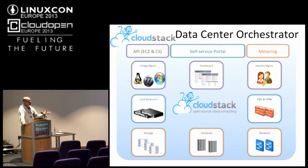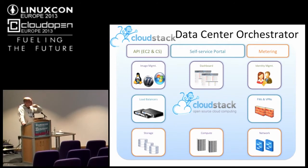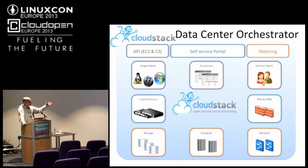We have two types of networking: basic networking and advanced. In advanced networking, we isolate all users in VLANs. In basic, all users share the same broadcast domain, so isolation between them needs to be done differently — we do it with security groups, just like Amazon. In networking, you can also talk to physical devices: F5 load balancers, Juniper SRX firewalls, Netscaler. When you install CloudStack, you also get image management, an identity management system with LDAP integration, a default dashboard, usage metering for billing, and an API.